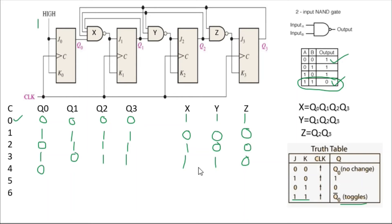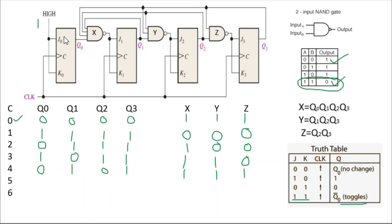Before the fourth clock: X=1, Y=1, Z=0. J0K0=1, q0 toggles (1→0). J1K1=X=1, q1 toggles (0→1). J2K2=Y=1, q2 toggles (1→0). J3K3=Z=0, q3 does not toggle (stays 1). After the fourth clock: q0=0, q1=1, q2=0, q3=1. Now find X, Y, Z: q0=0 so X=1. q1=1, q2=0, q3=1 — not all one, so Y=1. q2=0, q3=1 — not all one, so Z=1.